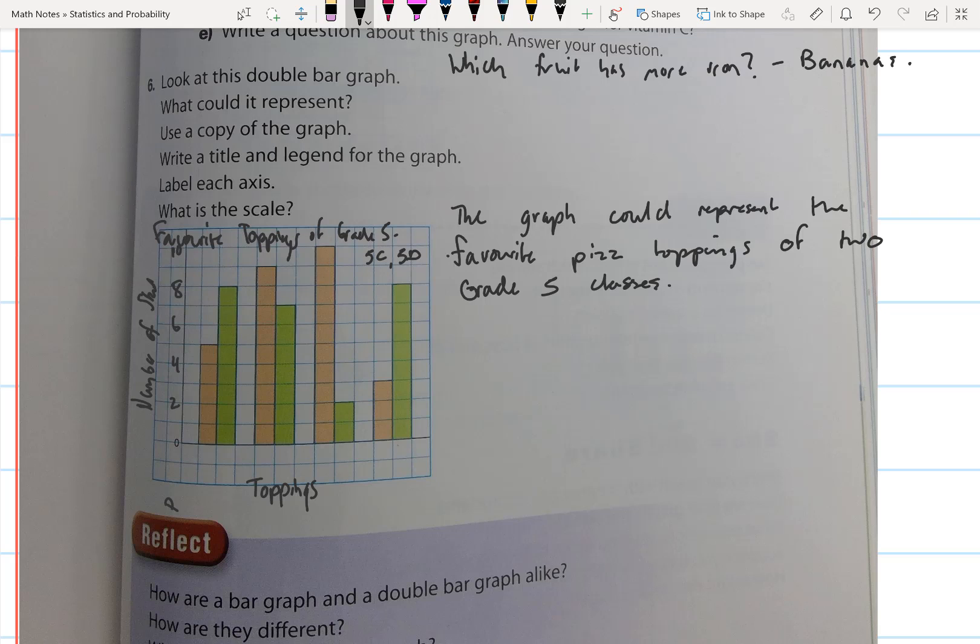And then I need to write the toppings. So this could be pepperoni, this could be ham, this could be extra cheese, and this could be peppers.